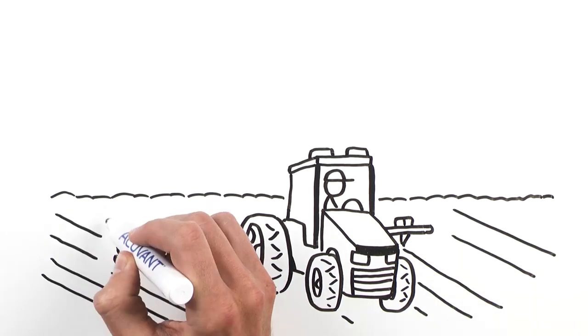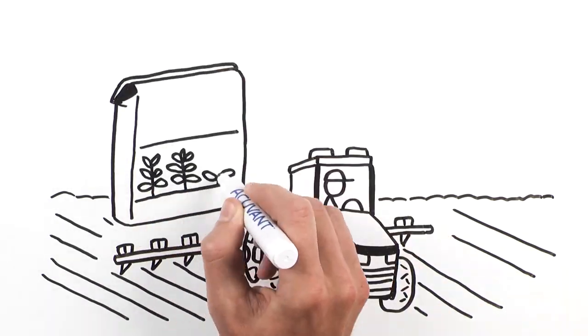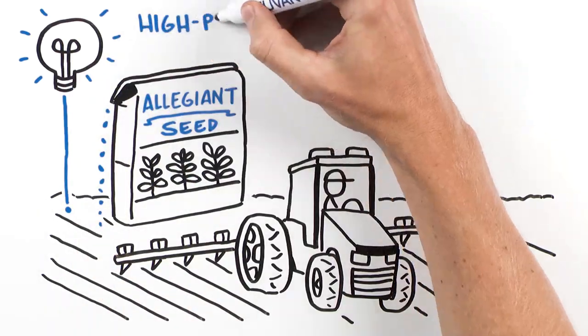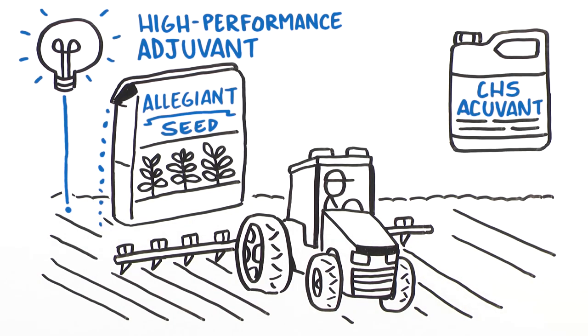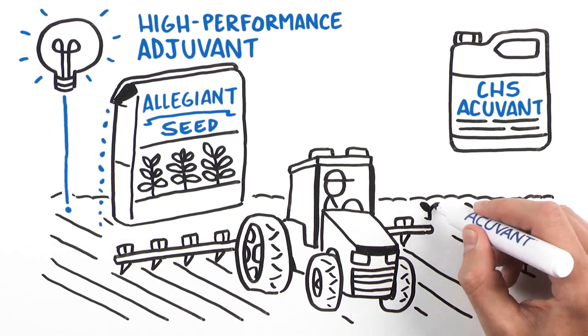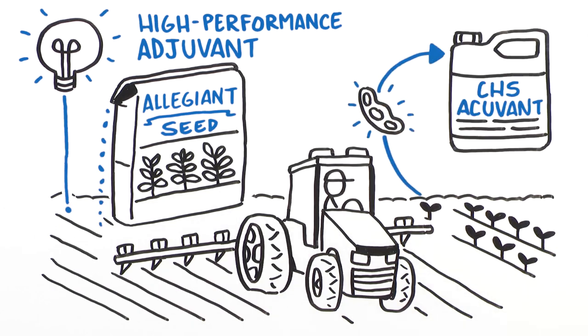You plant a lot of seeds, but did you know you actually planted the idea behind a new high-performance adjuvant? It's true, because CHS Acuvant starts with soybeans grown exclusively by CHS farmer owners like you.